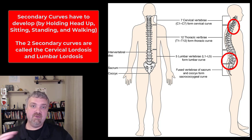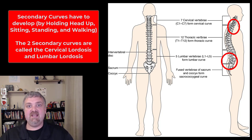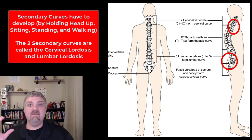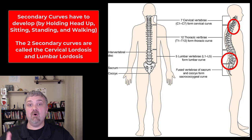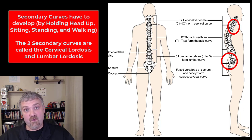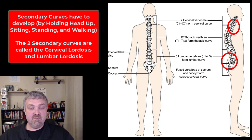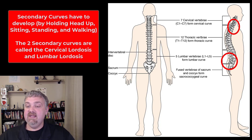So your primary curves are the ones you were born with — that fetal position, kyphotic curves: thoracic and sacral. The cervical and lumbar curves are going to be a lordosis and have to develop over time. Those are your four key curves in your vertebral column, and which ones are primary and which ones are secondary.